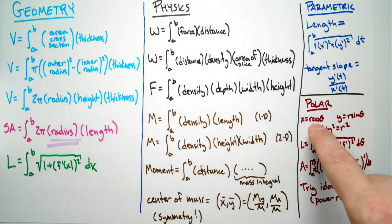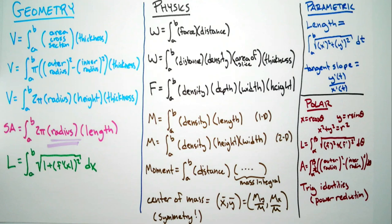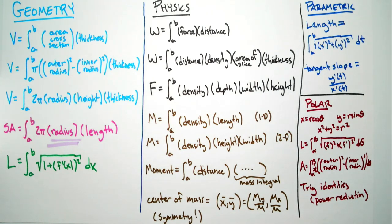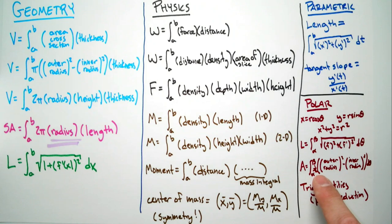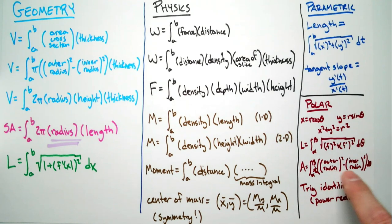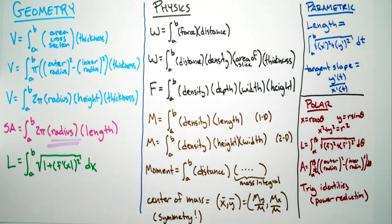For polar: x = r cosine θ, y = r sine θ — that's your conversion tool. You also have x² + y² = r². Area equals one-half times (outer radius² minus inner radius²). Make sure you know your trig identities, and in particular power reduction.